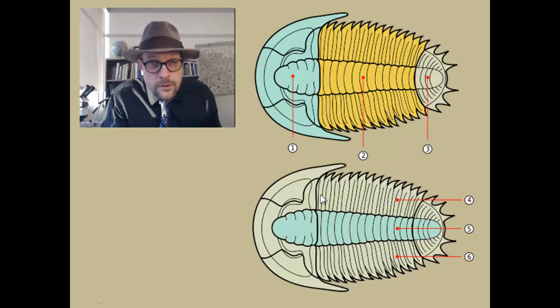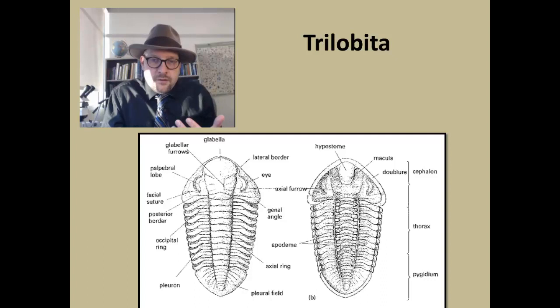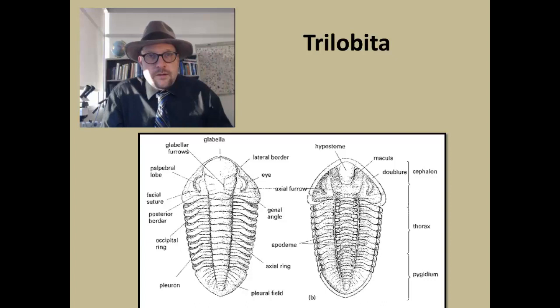Trilobites are also known for having these three longitudinal lobes. It has a right and left pleural lobe, and then it has what is called the axial lobe, which is this part shaded in blue. Now the cephalon, or head, contains the glabella—this is a raised protuberance on the center of the cephalon with often paired eyes on either side.